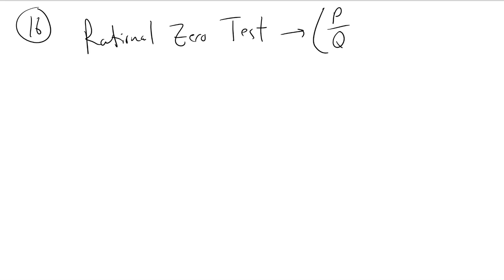A lot of times students aren't sure what that is, but if you remember doing a p over q list in Algebra 2, that is the Rational Zero Test. So when I say p over q, p is the constant and q is the leading coefficient.